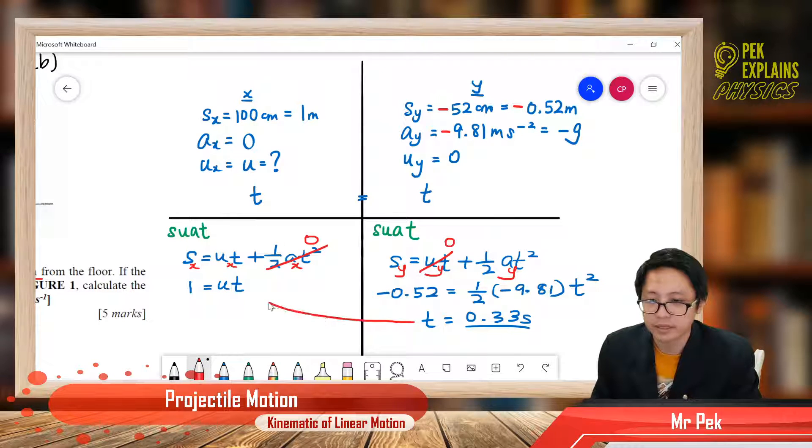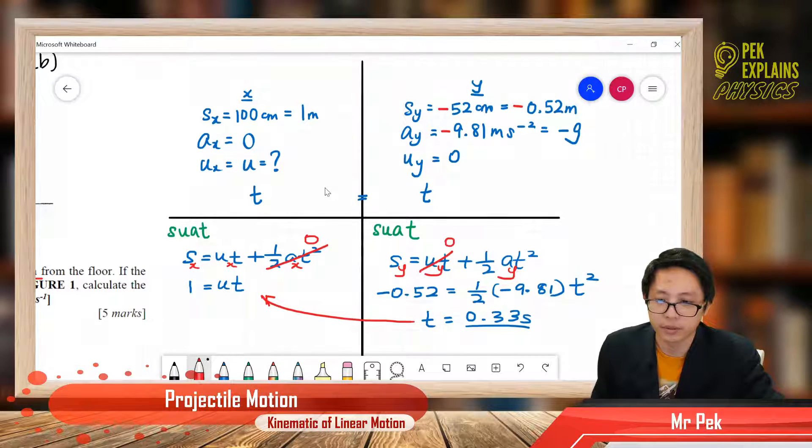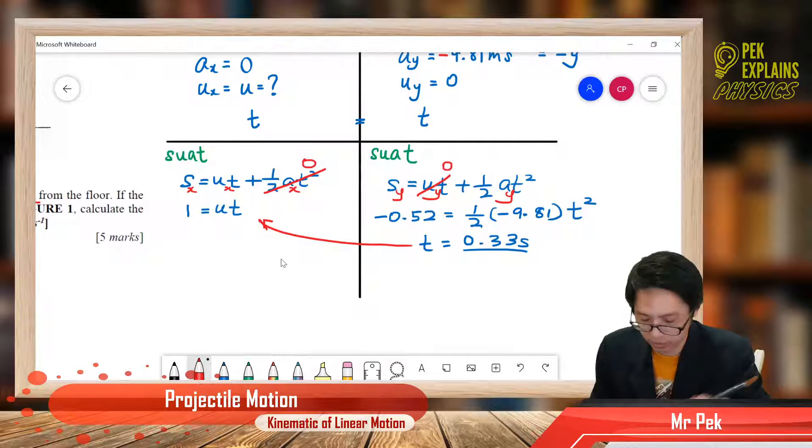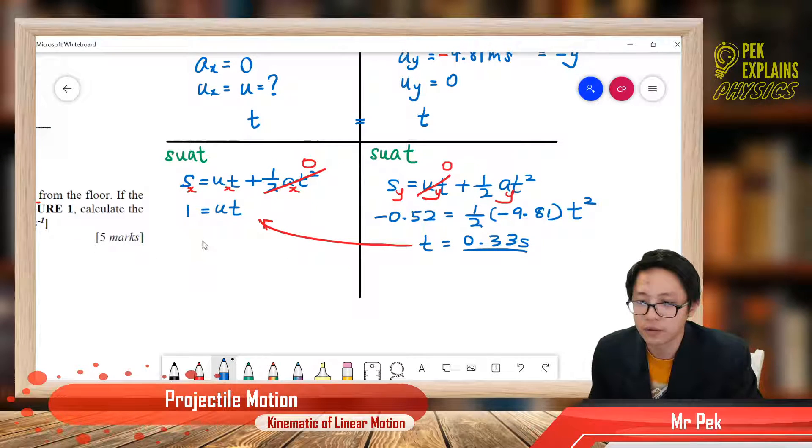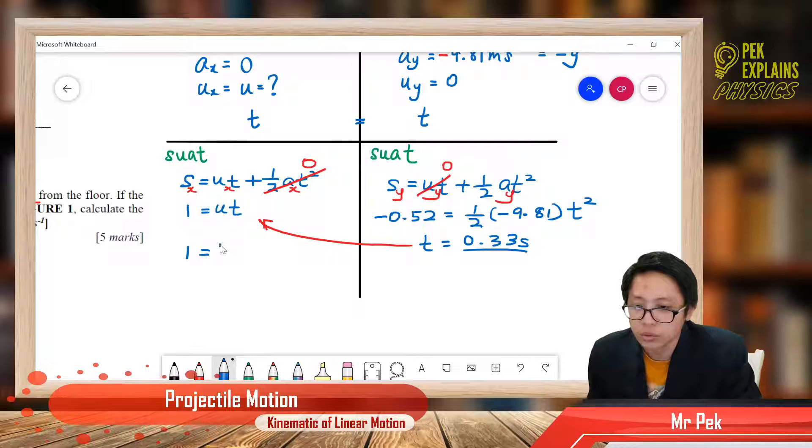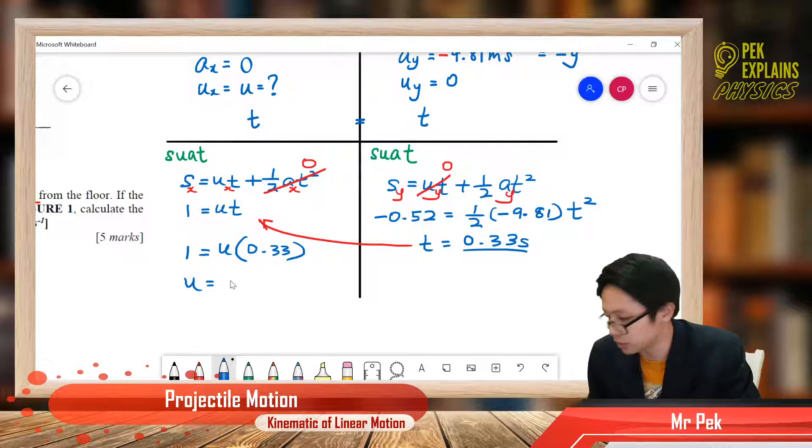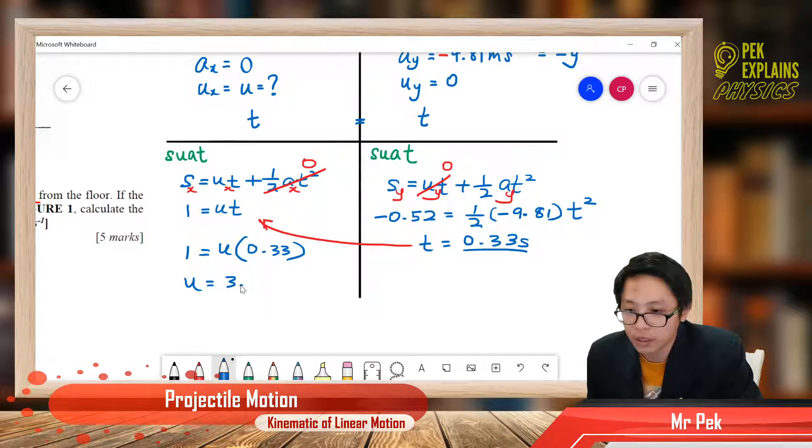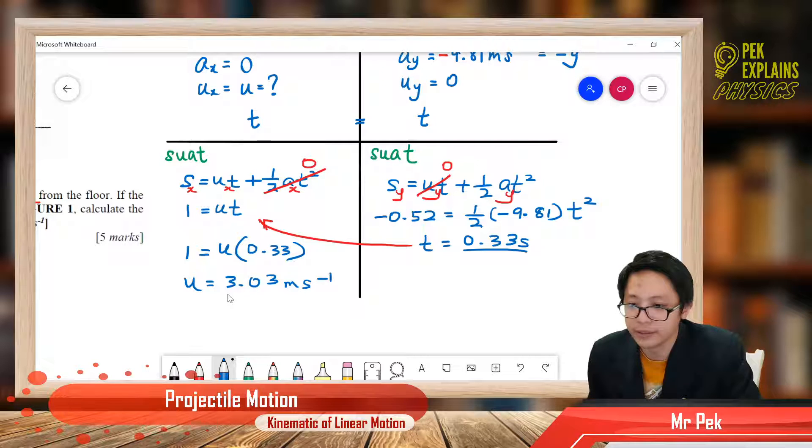We got the time is equal to 0.33. So from here, we can substitute to the x component. And what answer do we get? So 1 equal to u times 0.33. So u will be equal to 1 divided by 0.33. We will get 3.03 meter per second.